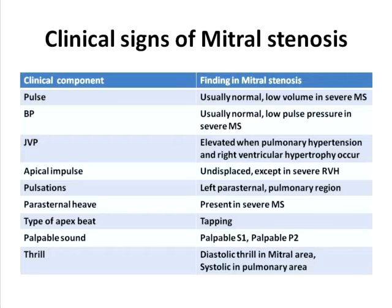The palpatory finding of the apical impulse is tapping, which is nothing but a clearly palpable first sound. You can also palpate the second sound P2 in the pulmonary area, in addition to the palpable S1 at the apex. A diastolic thrill can be felt in the mitral area due to the mid-diastolic murmur, and in severe mitral stenosis a systolic thrill may be present in the pulmonary area as a result of pulmonary hypertension.